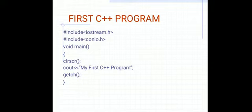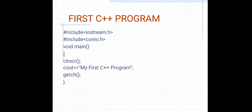The clrscr function is used to clear the screen whenever you execute a program repeatedly. Then you can see cout — cout is an output stream. After cout we use the insertion operator, and the statement you want to print on screen should be written in a pair of double quotes. So 'My first program' is written in double quotes, and after that you have to give a semicolon.